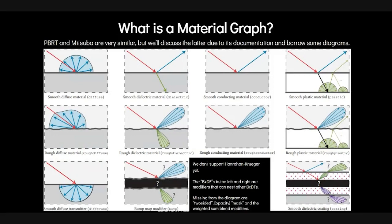So, what is the material graph? You might know them from your favorite visual scripting editor when working with materials. Here we have PBRT and Mitsuba — this is Mitsuba documentation, and they're very similar. Whereas something like Unreal Engine lets you construct shaders that don't make physical sense, material definition language or MaterialX constrain you to compose your materials out of basic physically-based rendering BRDFs or BSDFs, for which importance sampling needs to be possible.